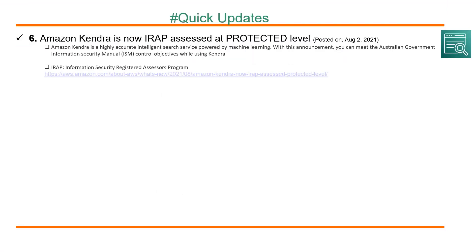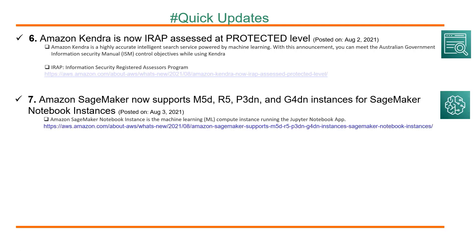Now for remaining quick updates. Amazon Kendra, a machine learning service, is now IRAP assessed at the protected level. With this announcement you can meet the Australian Government Information Security Manual ISM control objectives while using Kendra. Amazon SageMaker now supports M5D, R5, P3DN, and G4DN instances for SageMaker notebook instances.